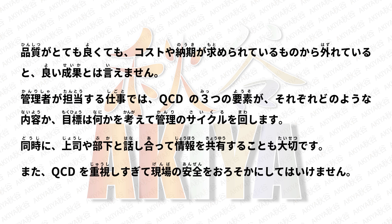品質がとても良くても、コストや納期が求められているものから外れていると良い成果とは言えません。管理者が担当する仕事では、QCDの3つの要素がそれぞれどのような内容か、目標は何かを考えて管理のサイクルを回します。同時に上司や部下と話し合って情報を共有することも大切です。また、QCDを重視しすぎて現場の安全をおろそかにしてはいけません。